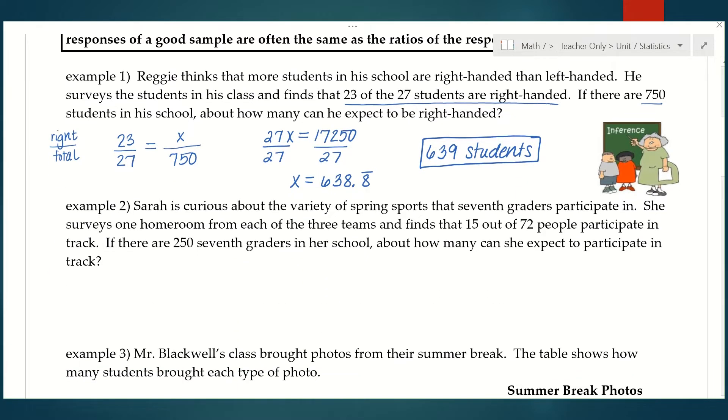Number two, Sarah is curious about the variety of spring sports that seventh graders participate in. She surveys one homeroom from each of the three teams and finds that 15 out of 72 people participate in track. If there are 250 seventh graders in her school, about how many can she expect to participate in track? From our survey, we know that 15 out of 72 kids said that they participate in track.